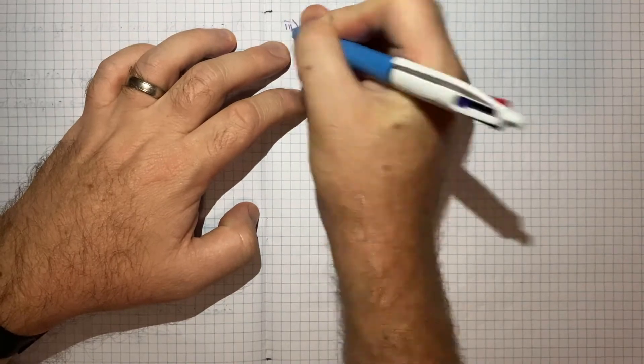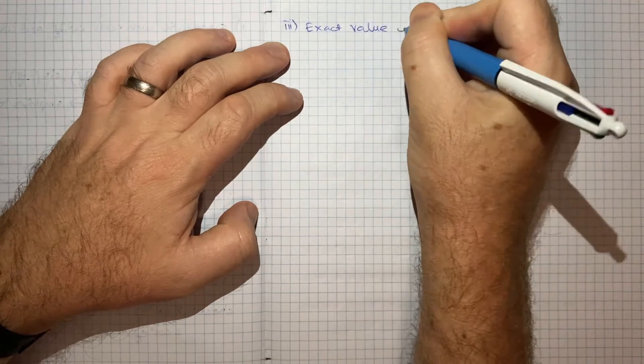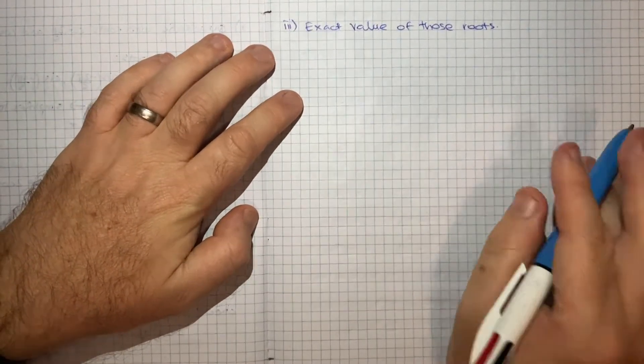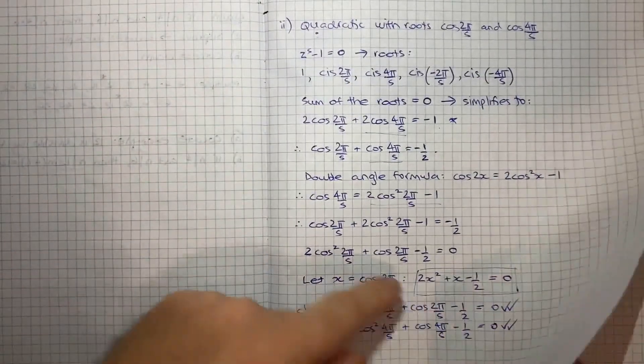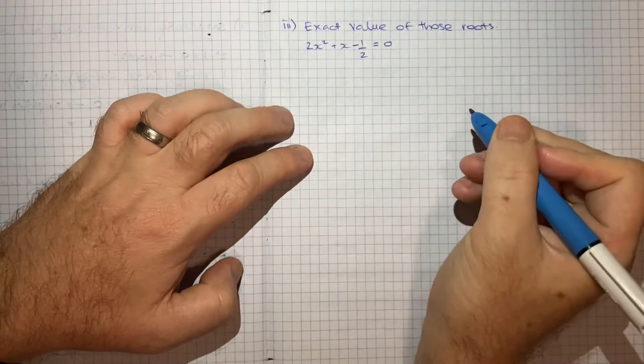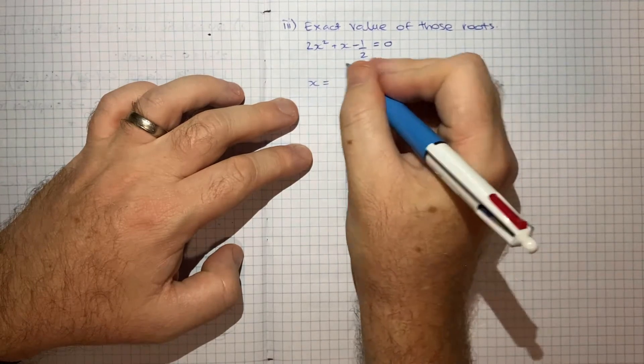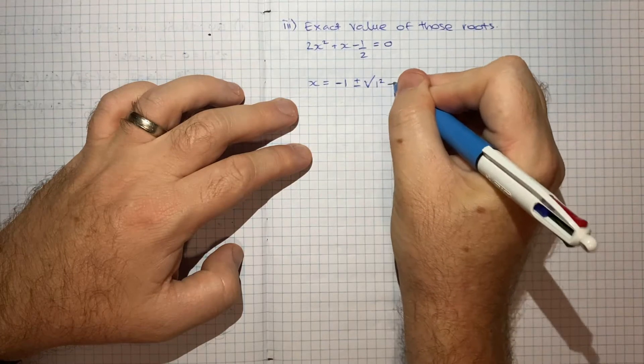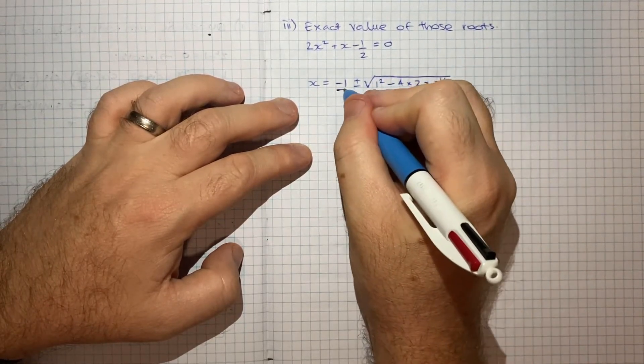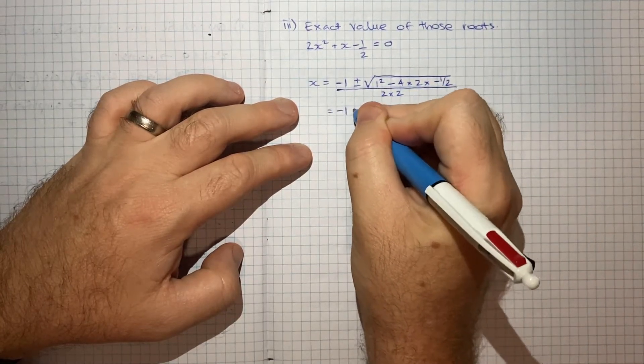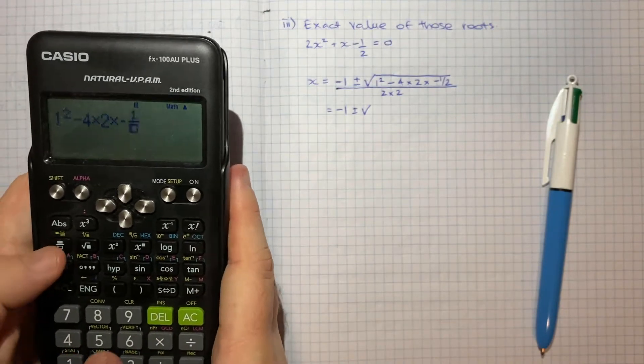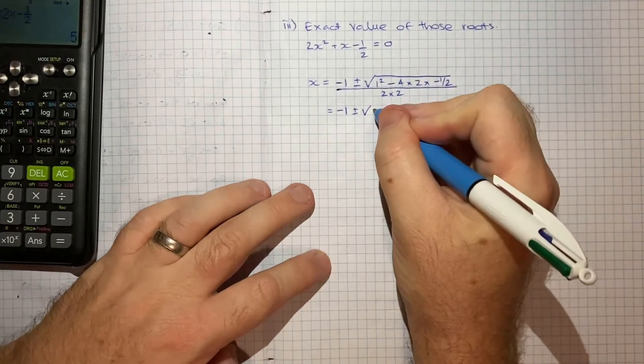So part 3 wanted us to find the exact value of those roots, the cos 2π/5 and cos 4π/5. Now we can just use our trusty quadratic formula to tackle this. So the quadratic we're dealing with is 2x squared plus x minus 1 half equals 0. Using the quadratic formula, we know that x equals negative 1 plus or minus root 5 all divided by 4.